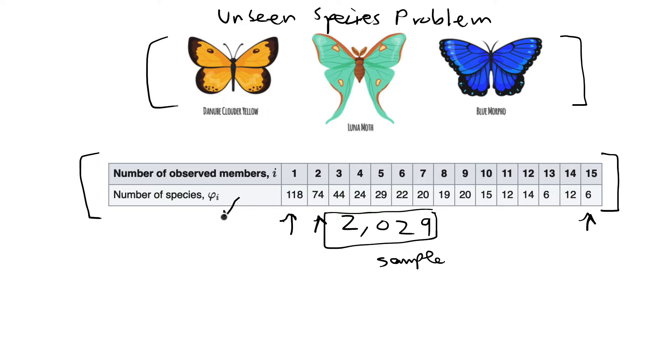Then for the total number of species that were found, if you sum this row, the total number of species found was 435. So we have 2,029 as our sample, which discovered 435 species of butterflies and moths. So the question that Corbett posed to Ronald A. Fisher was if I keep sampling and increasing my sample size, how many new species will I discover? So I haven't discovered these unseen species, but I want an estimator or an estimate of how many new species I will find.